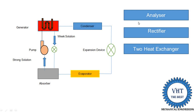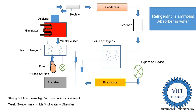So what is the function of the analyzer? What is the function of the rectifier? What is the function of these two heat exchangers? I will explain in detail. Now we move towards the schematic diagram of the practical vapor absorption refrigeration system. This is the diagram — we are doing some modifications. We are adding the analyzer and rectifier after the generator.